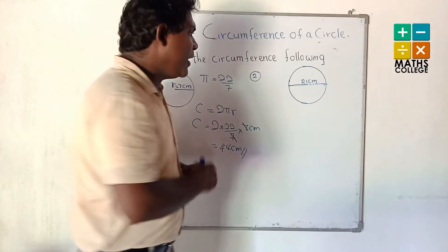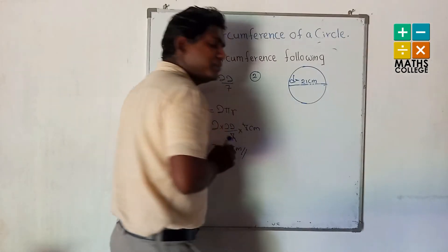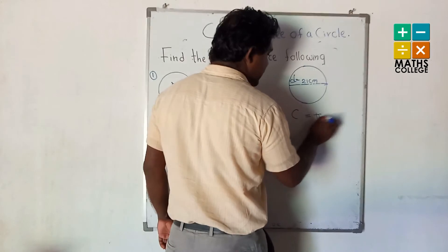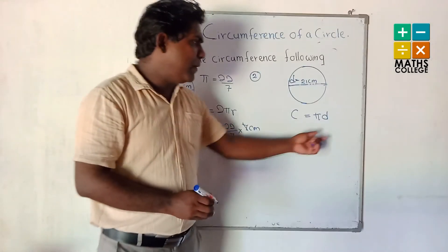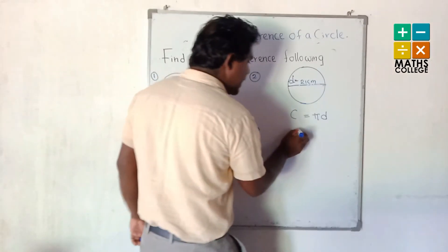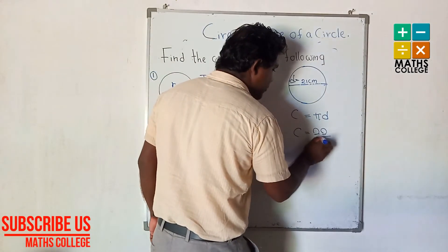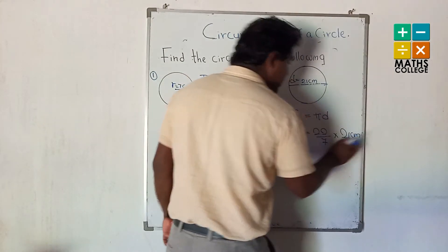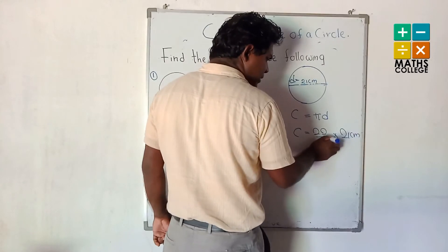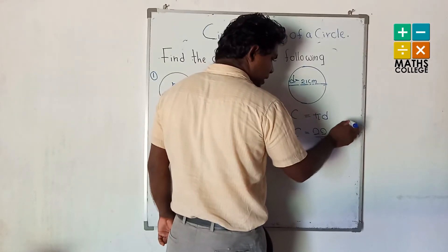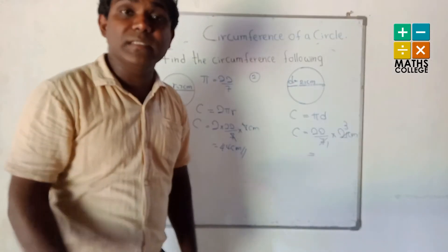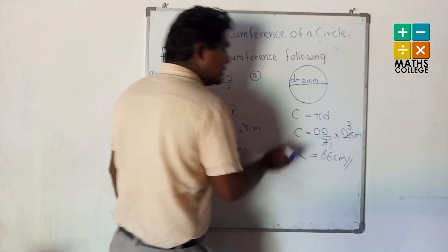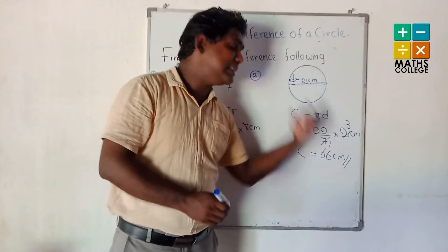Now the second example: diameter is 21 cm. We apply the formula C equals πD, since we are given diameter. C equals 22/7 multiplied by 21. Cancel 7 into 21 gives 3. So 22 multiplied by 3 equals 66 cm. The circumference of this circle is 66 cm.